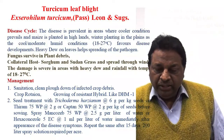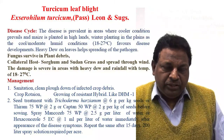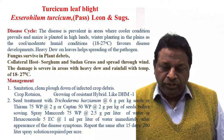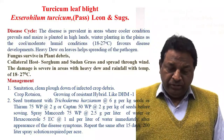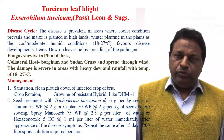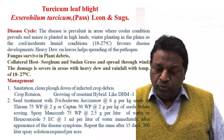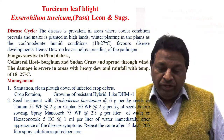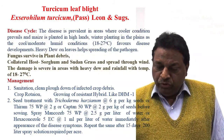This disease prevails in areas where low temperature takes place. Cool, moderate, humid conditions with temperatures of 18 to 27 degrees Celsius favor the development of the disease. Dew on leaves also helps in spreading of the pathogen. The fungus survives in plant debris. Collateral hosts such as sorghum and sudan grass also help in the survival and spread of the pathogen through wind. Damage is severe in areas with heavy dew and rainfall at a temperature of 18 to 27 degrees Celsius.